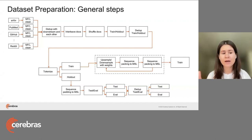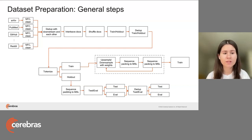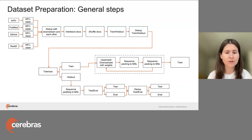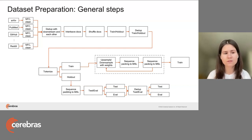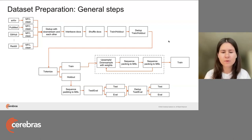After that, you want to combine all these different sources together — this is called interleaving. At this stage, you can also introduce sampling weights. For example, if I want to upsample arXiv, I would specify a sampling rate equal to 2 to double the size, and for everything else a weight of 1. You can also just interleave documents with equal weights. After that, you want to shuffle the documents.